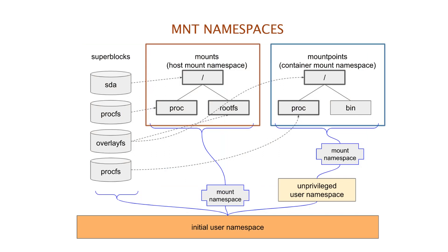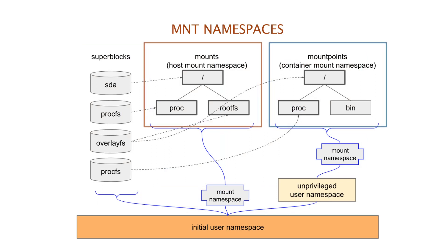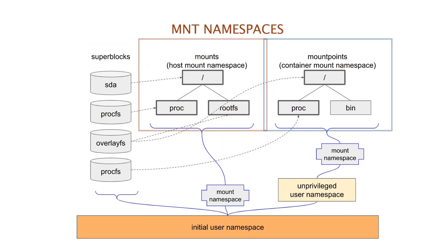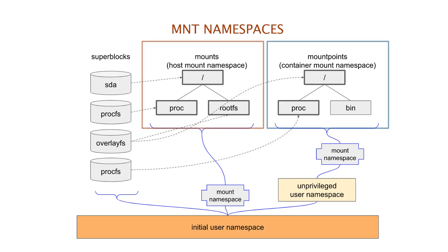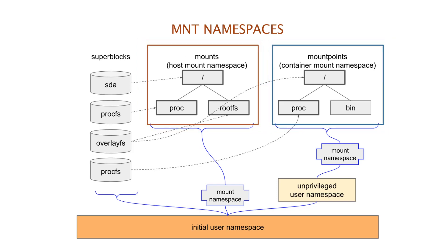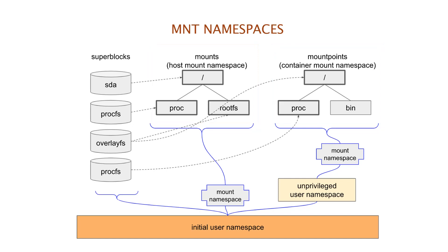Mount namespaces isolate the set of file system mount points seen by a group of processes. Thus, processes in different mount namespaces can have different views of the file system hierarchy. Within a mount namespace, the mount and umount system calls cease to operate on a global set of mount points. Instead, their operations affect just the mount points created inside the mount namespace.